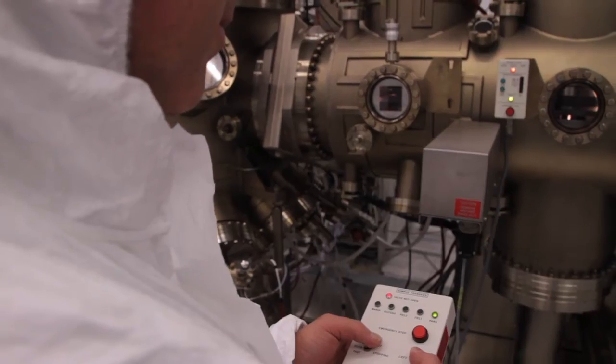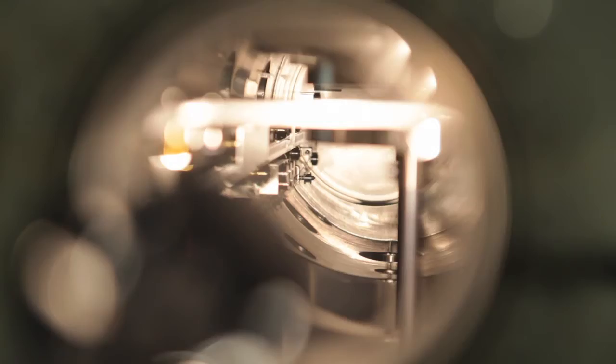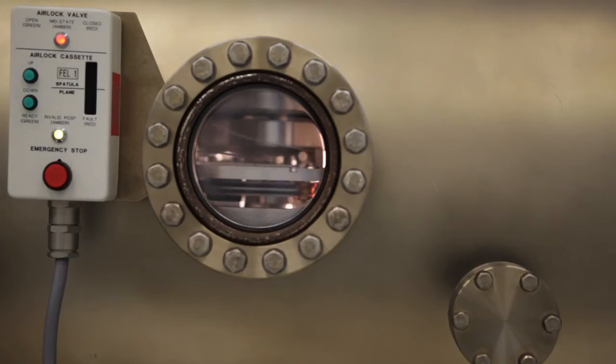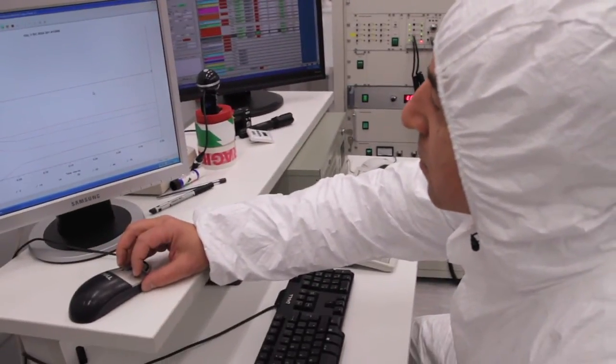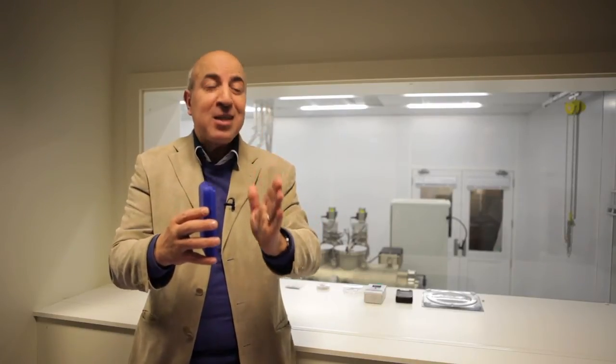We grew at extremely low rates, at rates where we could control the flux of atoms coming to better than one hundredth of an atomic layer per minute, which was accurate enough for us to make sure we are depositing exactly 10 atomic layers.